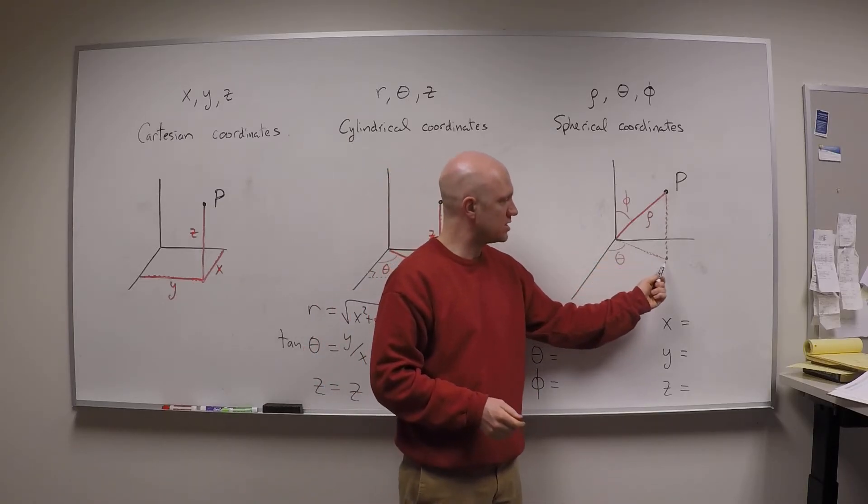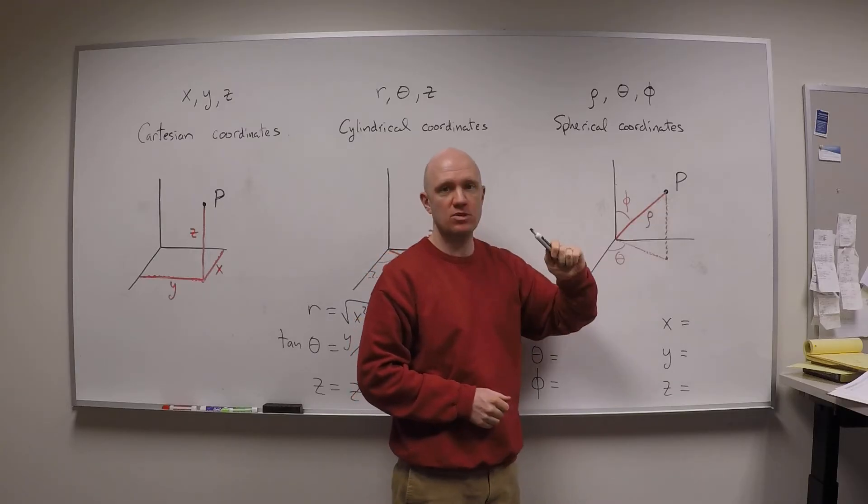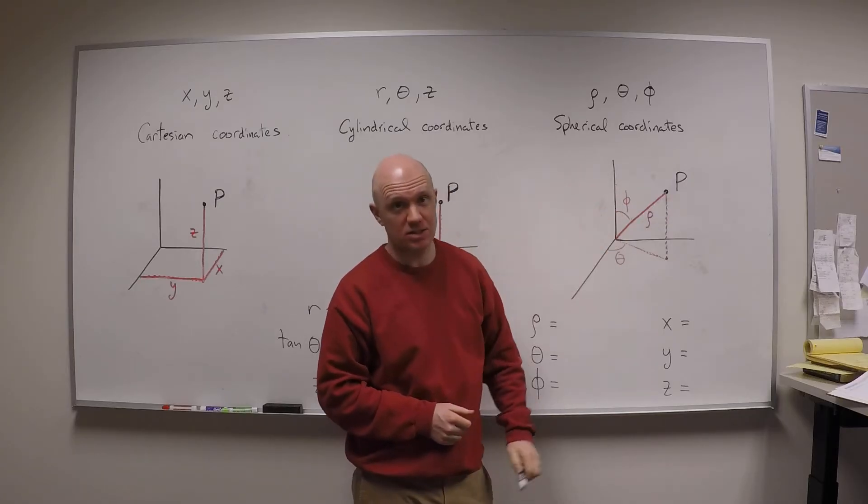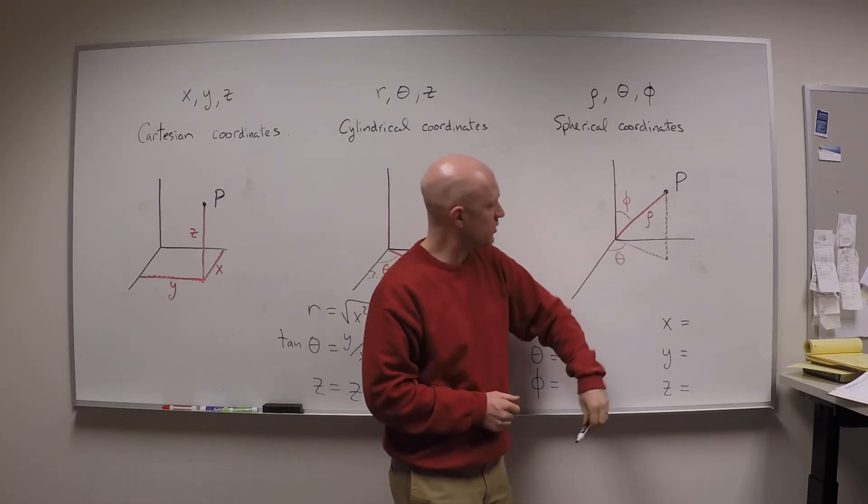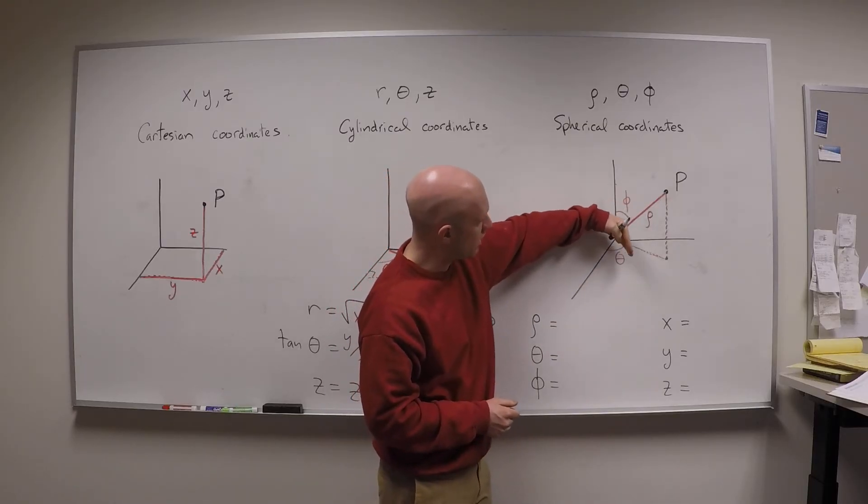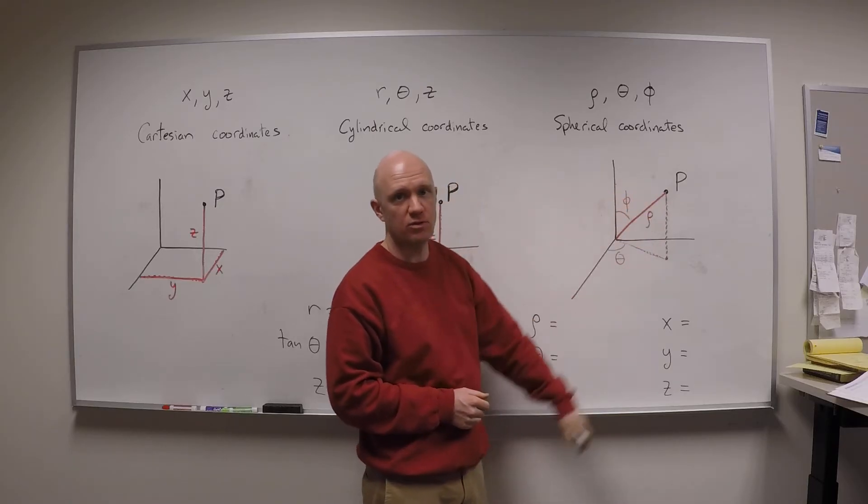But now, instead of r being the distance we have to go out in the xy plane, we have a spherical radius rho. Rho is the total distance from the origin out to the point P. We also have this new angle phi, which is the angle that I make with the z axis. So in order to get to a point in spherical coordinates, I have to go out a radius of rho, I have to swing around in the xy plane at angle of theta, and I have to swing down an angle of phi from the z axis.